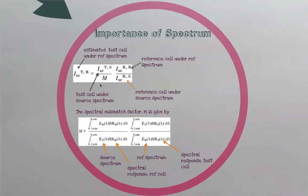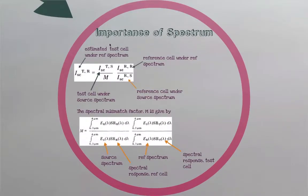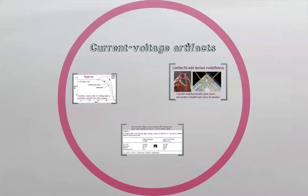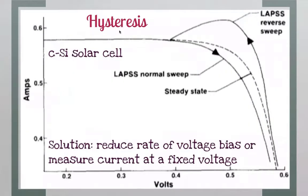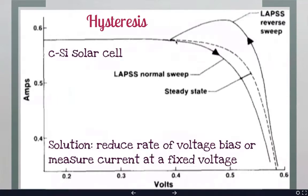This drives home the importance of the spectrum of light, and we'll come back to this when discussing spectrum splitting. To estimate solar cell efficiency it's very important to understand what spectrum of light is used. There are also some artifacts in current-voltage curves — one simple example is hysteresis: if you sweep the voltage increasing from zero to some value, the current drops; but if you then decrease the voltage going back, the curve follows a different direction.